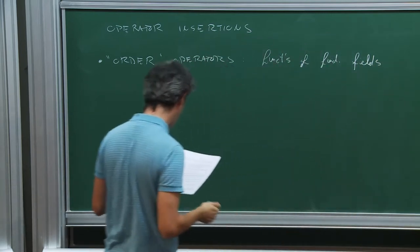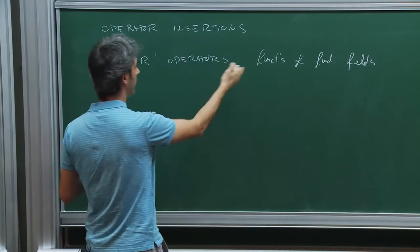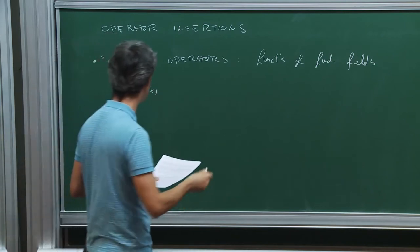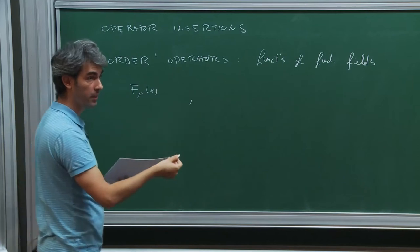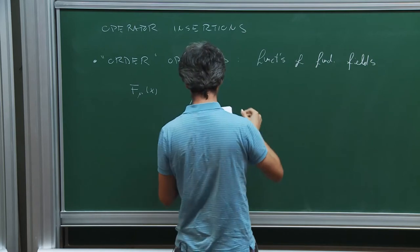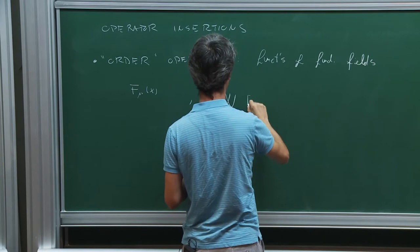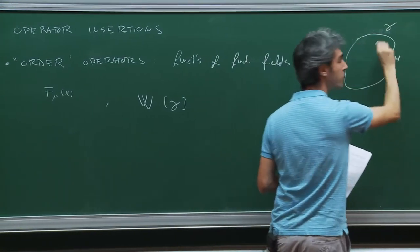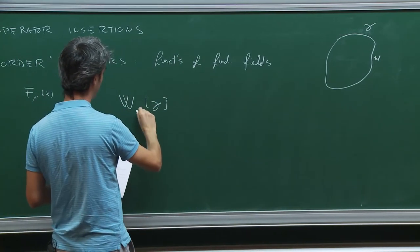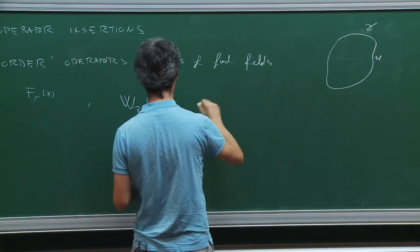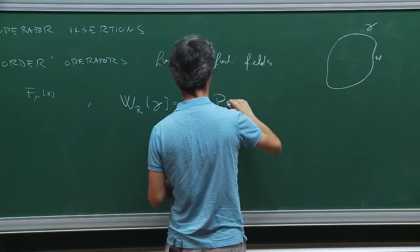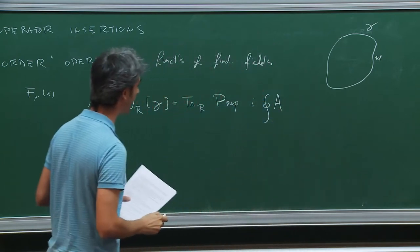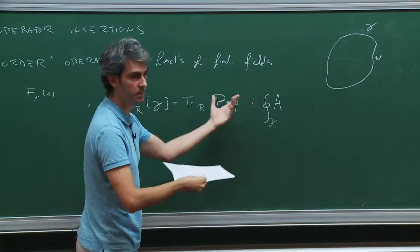By fundamental fields I mean the fields used in the Lagrangian. One example of a local operator: in a U(1) gauge theory, an insertion of the field strength. An interesting class of non-local operators in a gauge theory is Wilson lines. These are defined by a closed contour gamma, parametrized by a representation R of the gauge group, and defined as the trace in that representation of the path-ordered exponential of the integral of A along the contour.